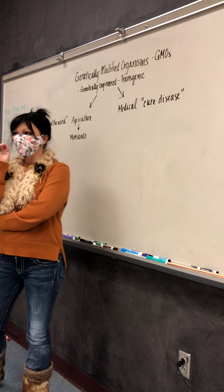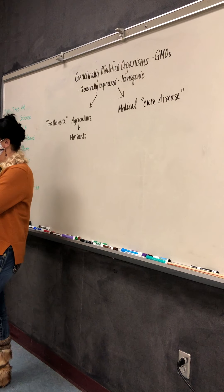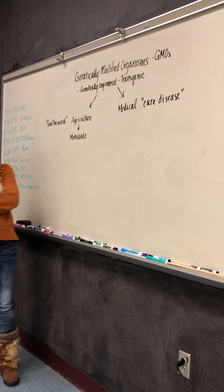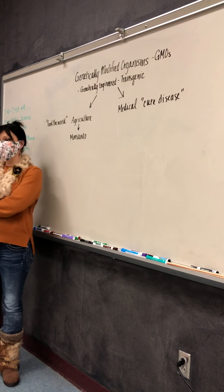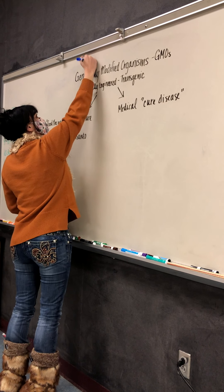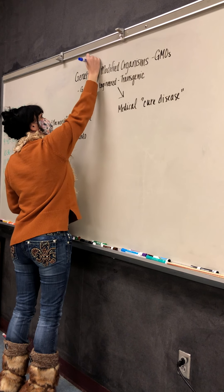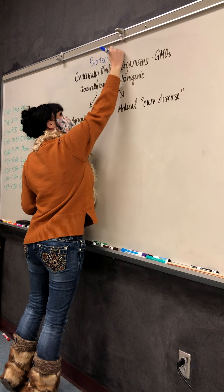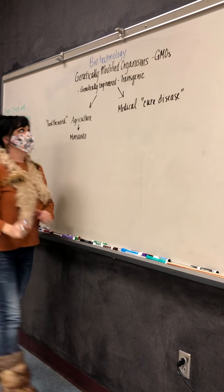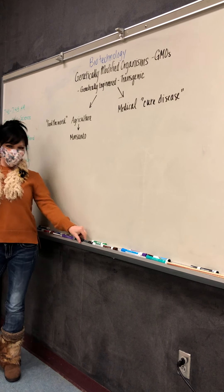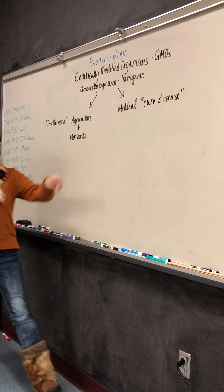Okay, so we're still in the same unit that talks about disease and bacteria and all that, but there's a section on biotechnology. So all of this falls under biotechnology. And it's talking about stuff that's genetically modified. So genetically modified organisms is abbreviated GMOs.